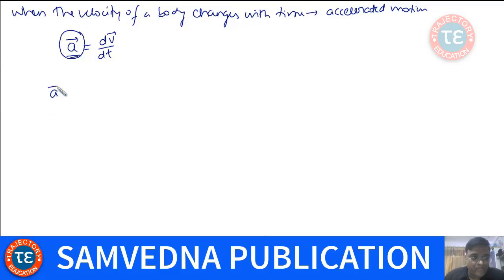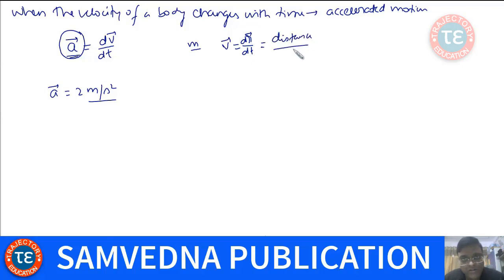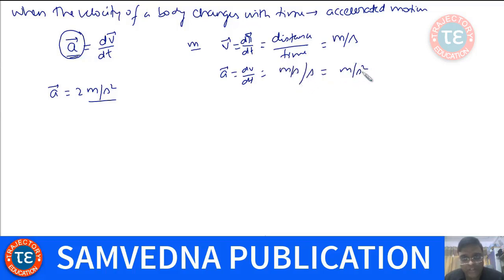Suppose a = 2 meters per second squared. Regarding units, you must be very clear. The unit of distance is meter. Velocity is dr/dt, so it is distance upon time — dimensionally, meter per second. Acceleration is dv/dt, so it is meter per second per second, or we call it meter per second squared.